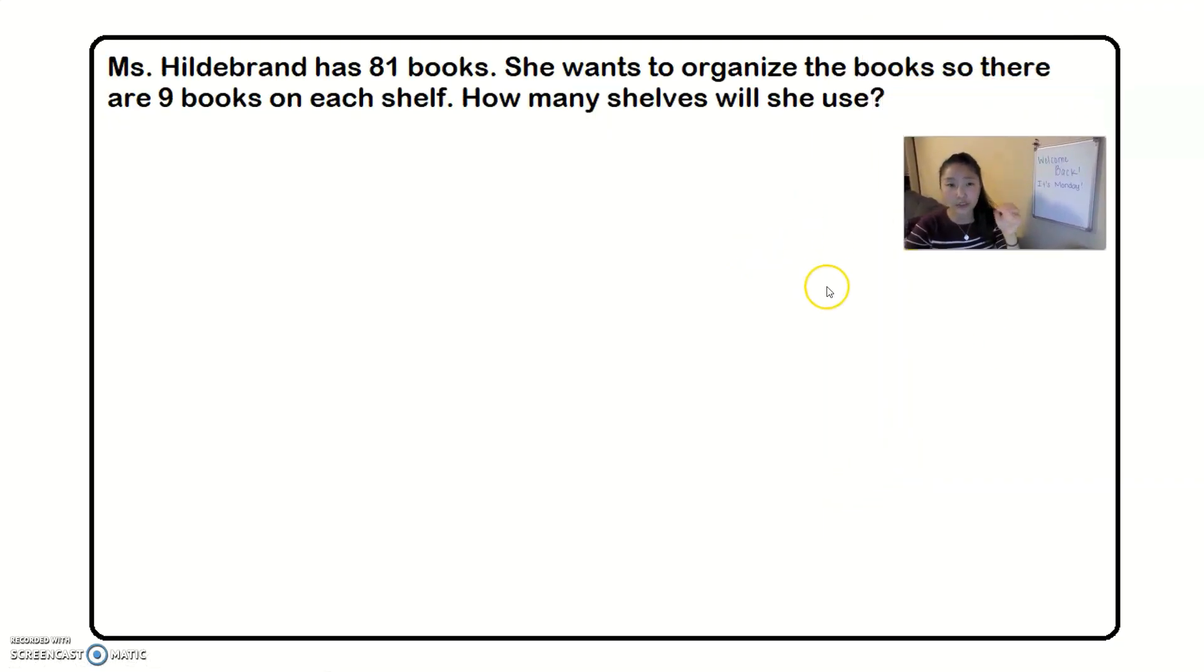So, like we usually do, we're going to go through this problem step by step just like we do in our three read problem for math. The first thing we should do is read it. Miss Hildebrand has 81 books. She wants to organize the books so there are nine books on each shelf. How many shelves will she use? The second thing we usually do is we reread it. This time I want you to read it with me. I'll go nice and slow. Miss Hildebrand has 81 books. She wants to organize the books so there are nine books on each shelf. How many shelves will she use?